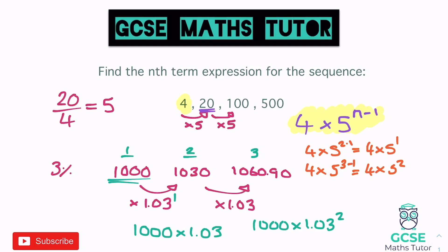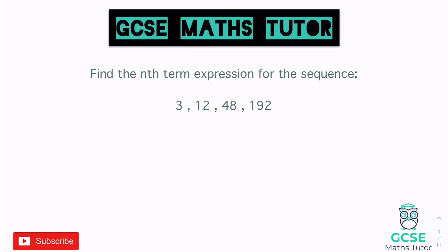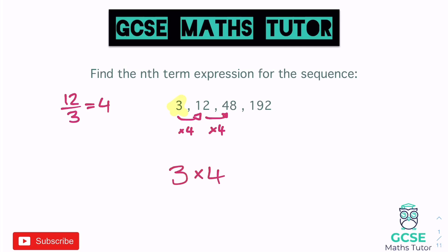Let's have a look at another question: find the nth term expression for 3, 12, 48, 192. Let's check what we're multiplying by — divide the bigger term by the one before it: 12 divided by 3 is 4. Double-checking: 12 times 4 is 48, so we're multiplying by 4. Take the starting number 3, times by 4 to the power of n minus 1, and there's our answer: 3 times 4 to the power of n minus 1.